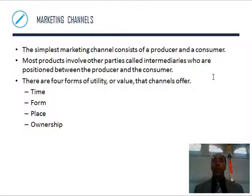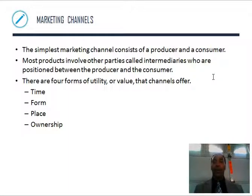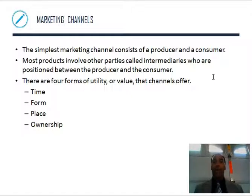Marketing channels. The simplest marketing channel consists of a producer and a consumer — I make the good, you buy the good and use it. Most products involve other parties called intermediaries who are positioned between the producer and the consumer. There are four forms of utility or value that channels offer: time, form, place, and ownership.